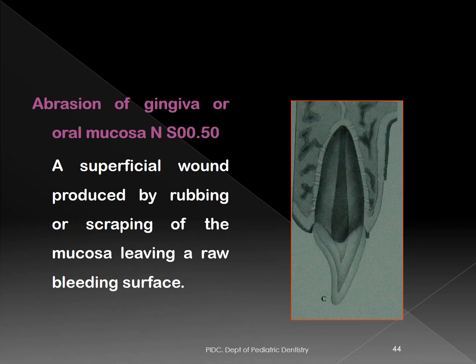Abrasion of the gingiva is different from laceration — it involves scraping or rubbing off of the top layer of the epithelium rather than tearing it from the submucosa. It can happen to the gingiva or the oral mucosa.